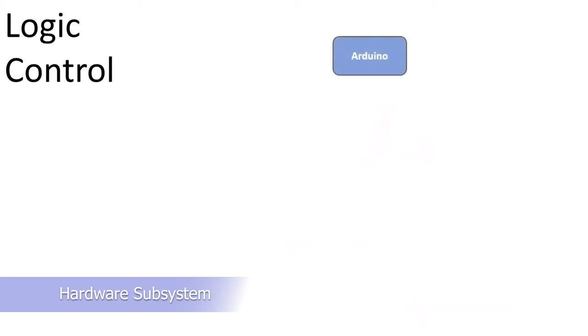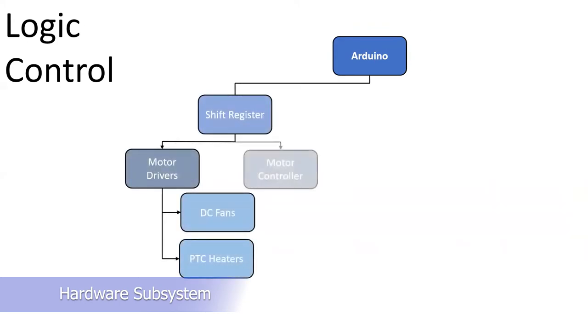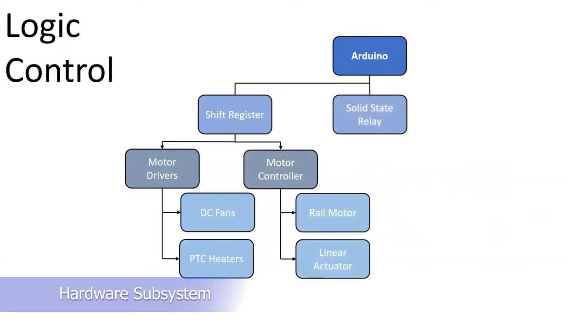The Arduino sends logic to activate DC devices using a shift register. Motor drivers control the fans and PTC heaters, while motor controller controls linear actuator and the rail motor. A solid state relay is used to control AC devices. In this case, we only have a single set which is used to control the heating bands.